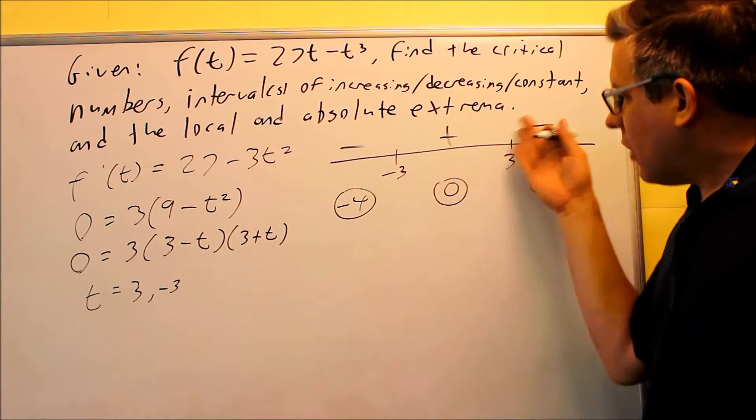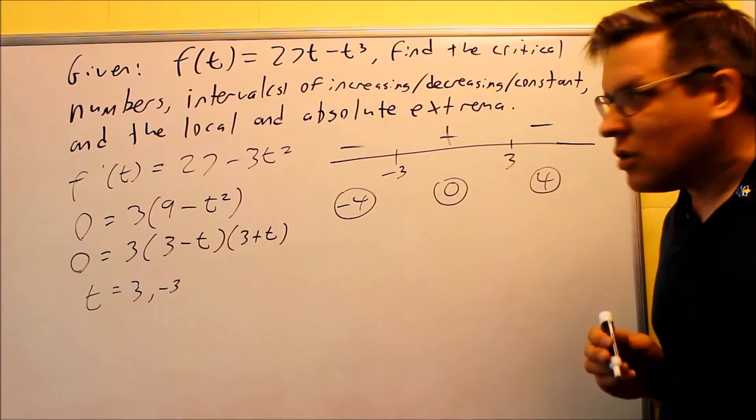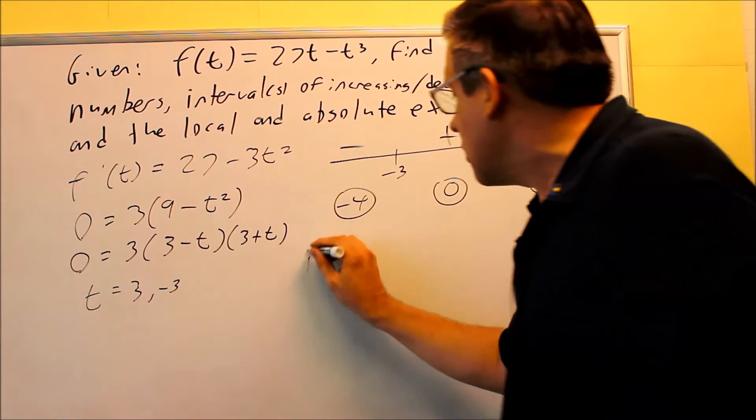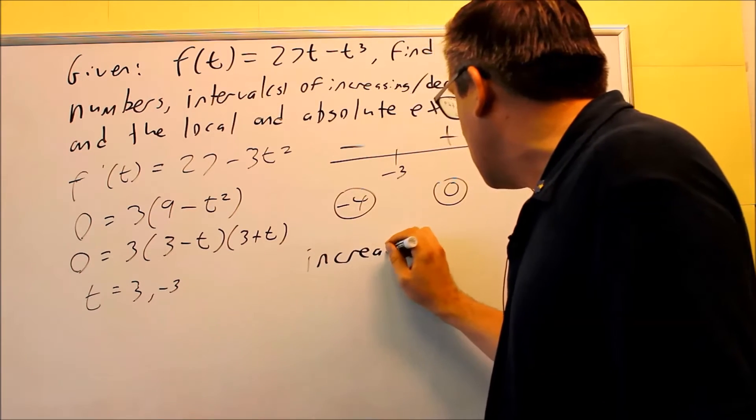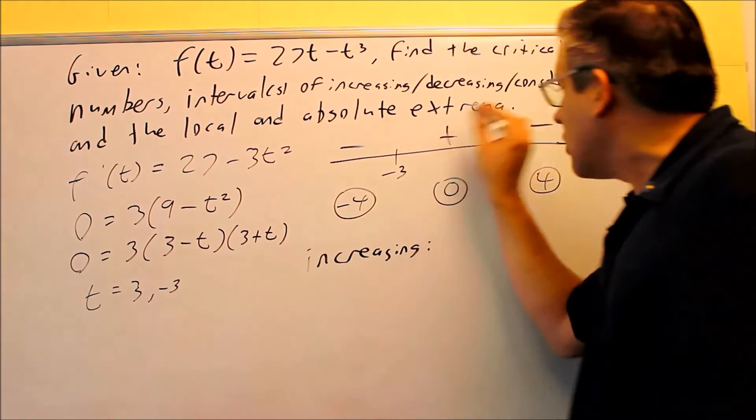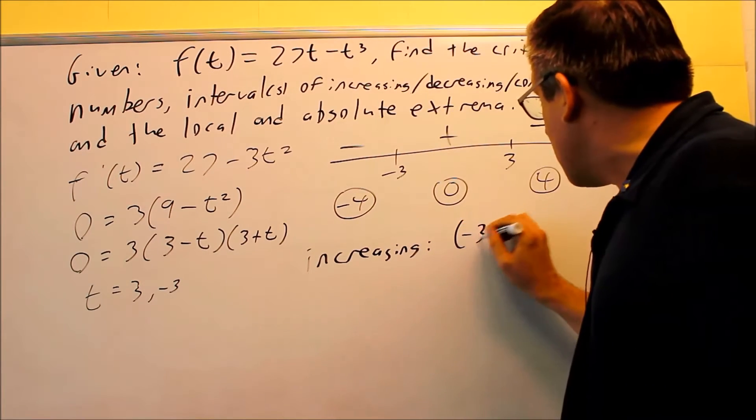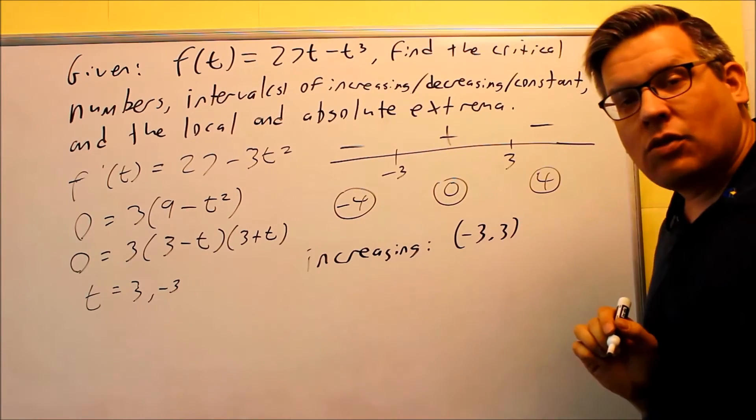So now, from this, I can tell automatically what my intervals of increasing and decreasing are going to be. My increasing, we'll start with first. You're looking for any region that has a plus in it. So increasing is going to be between negative 3 and 3.